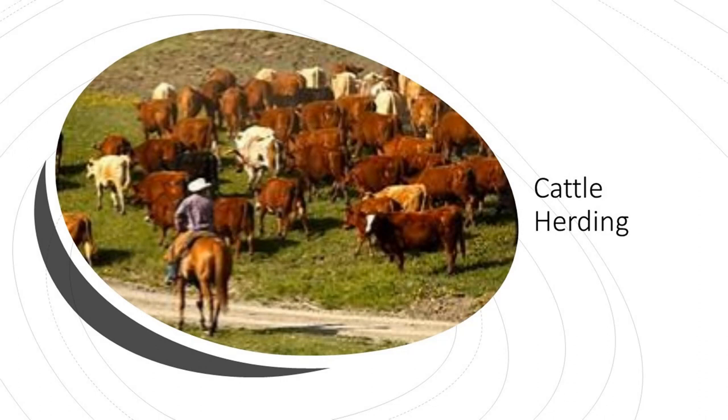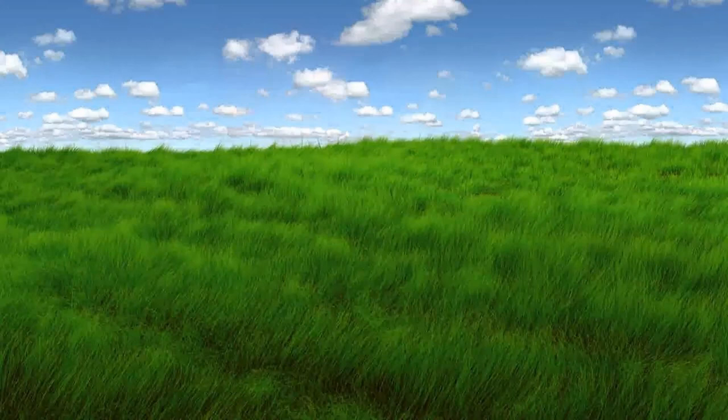We can relate the tragedy of the commons in many situations, but the best example is cattle herding in a non-controlled pasture area, or the common pasture area. For example, there is a piece of land that is not owned by anybody, also known as a common area. Anybody can access or use the resources in the said common area. Since it is common, there is no regulation, and any farmer can put their cows, sheep, and goats in any amount they wish.